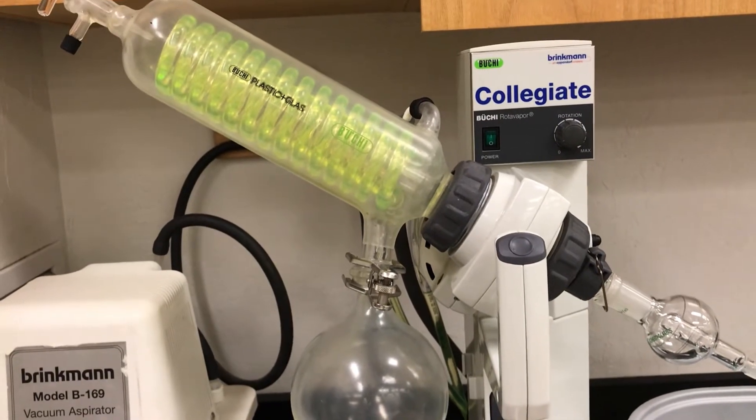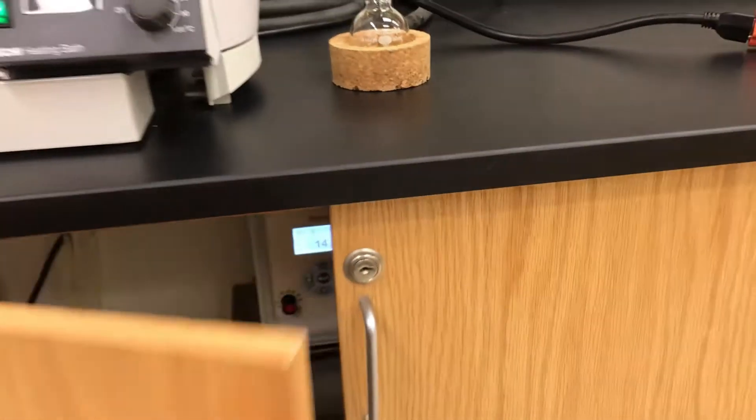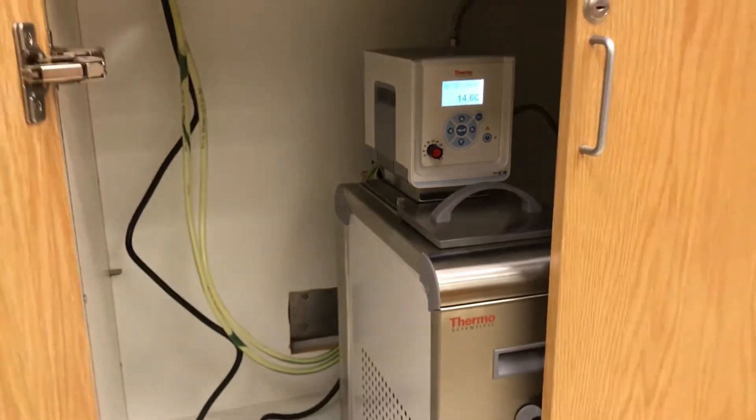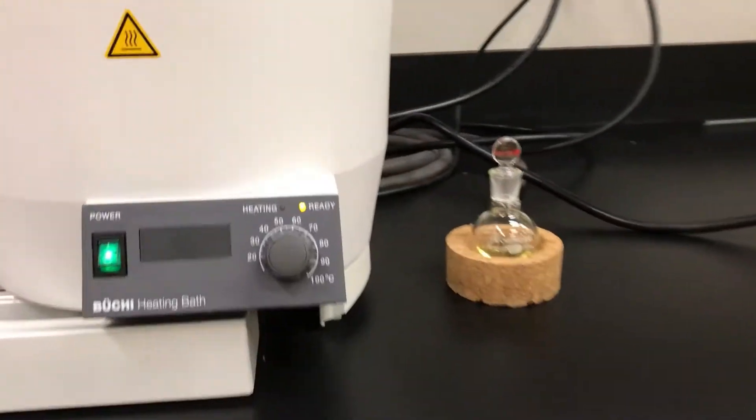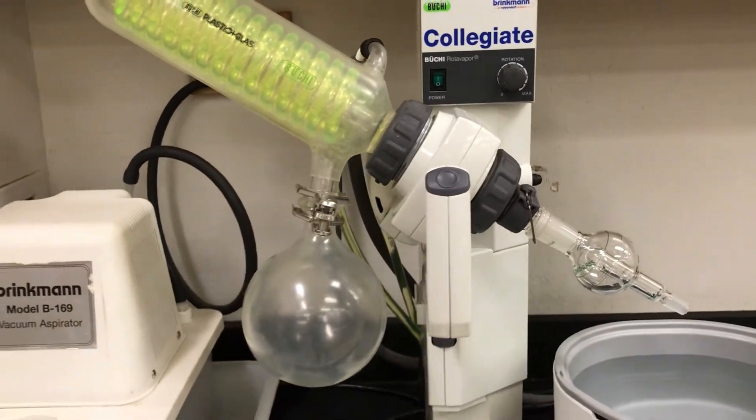That's our condenser and the yellow liquid is actually car antifreeze and it's connected to our chiller that we have underneath. So it's going to be running cold antifreeze through that condenser which means that the hot gas is going to contact it, turn into a liquid and be collected in that big bulb which is our receiving flask.